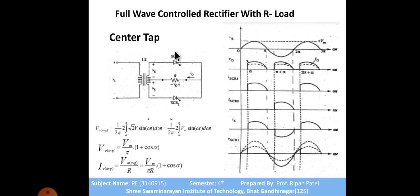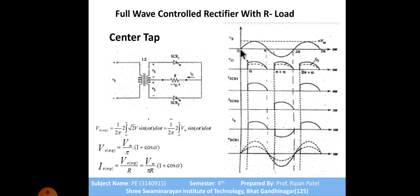Here SCR1 and SCR2 are connected and the load is purely resistive. The center tap transformer has plus and minus polarities, with zero potential at the center. Now from zero to pi - in the positive half cycle, this terminal becomes positive and the other becomes negative, so current will flow from here through SCR1.